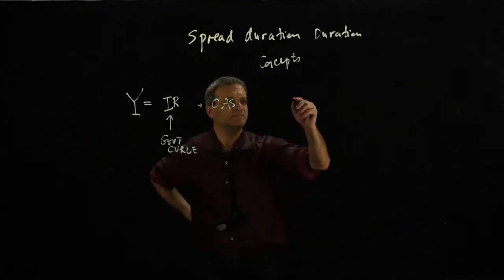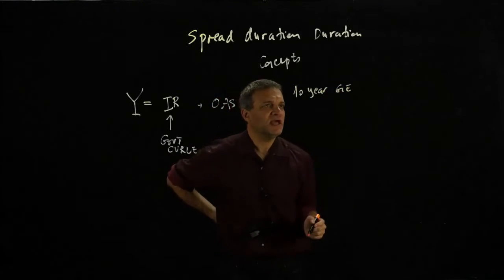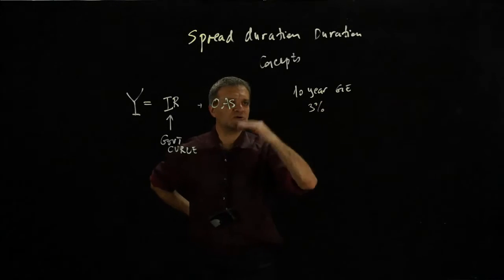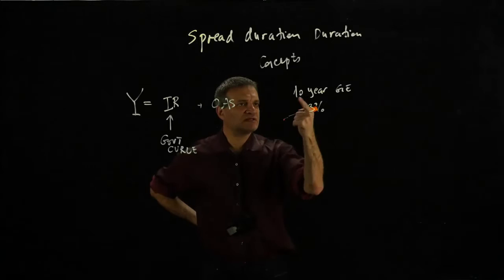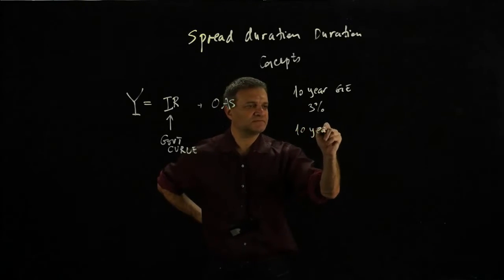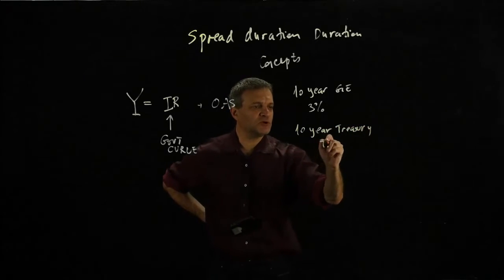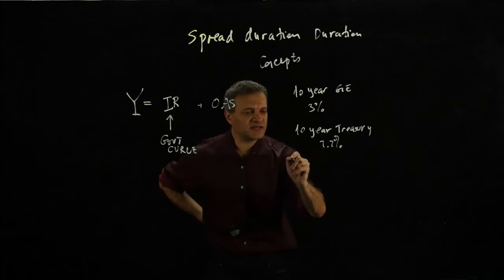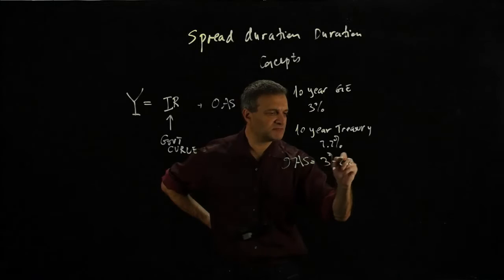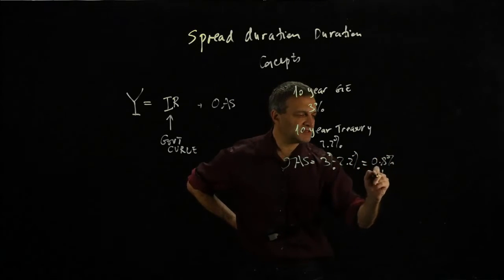For example, if I have a 10-year GE bond and it has a yield of 3%, and then my corresponding treasury — a 10-year treasury, a 10-year interest rate curve — is 2.2%, then my option-adjusted spread will be 3 minus 2.2, which is going to be 0.8% or 80 basis points.